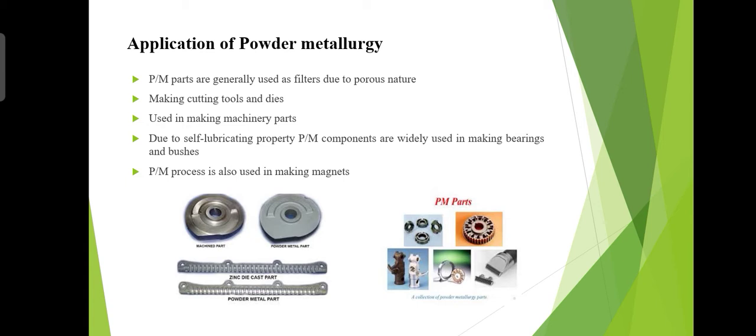The advantages of powder metallurgy show why these everyday products are made with this technology. The parts can be made in complex shapes and they can be mass produced. They use less energy and raw material, which cuts down on cost, making it a superior process for a customer-driven market.